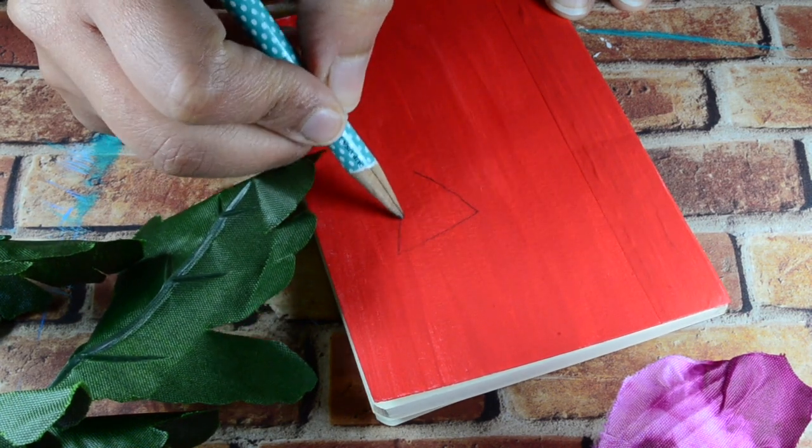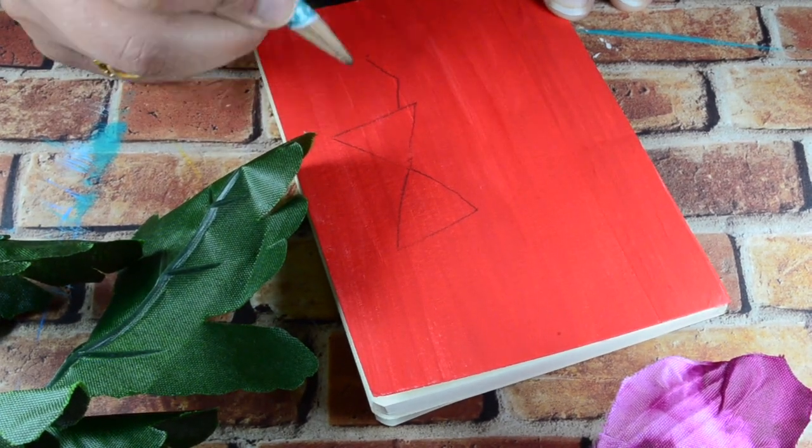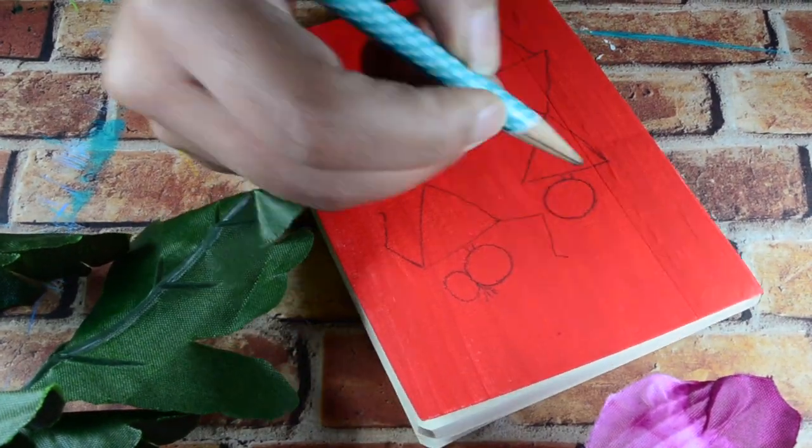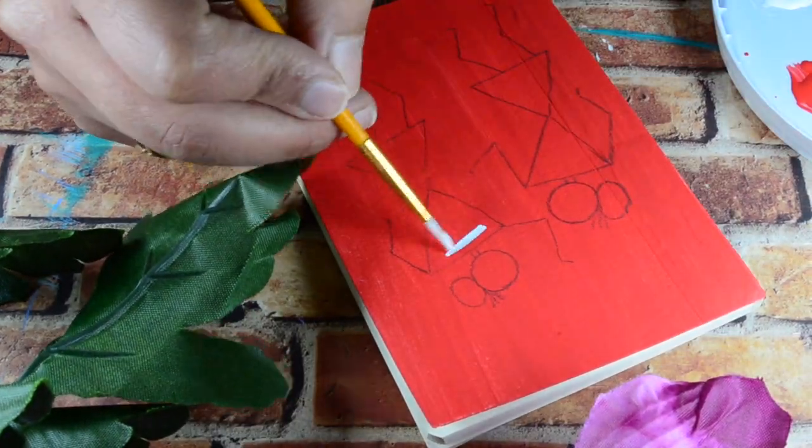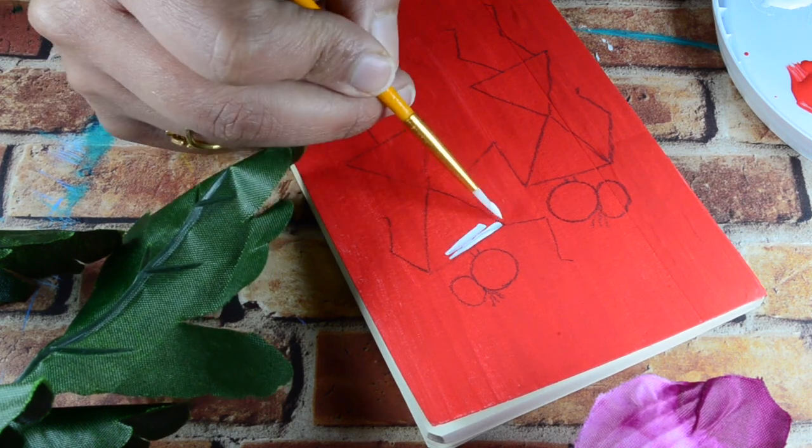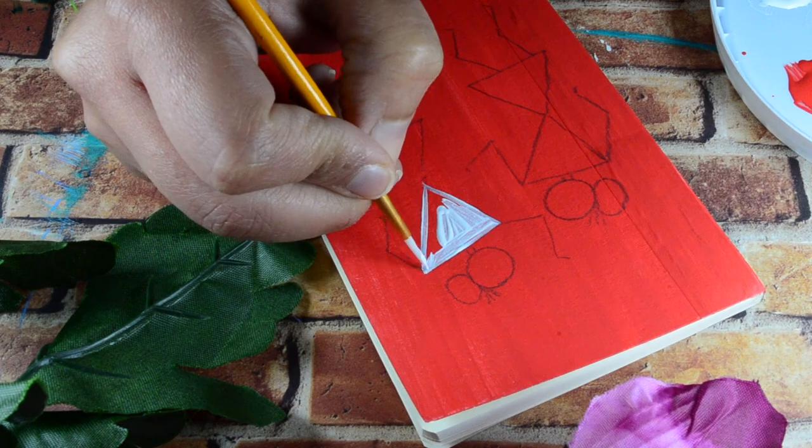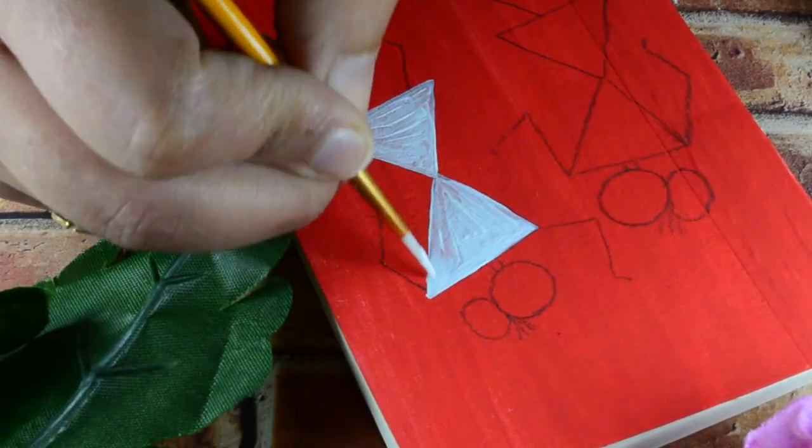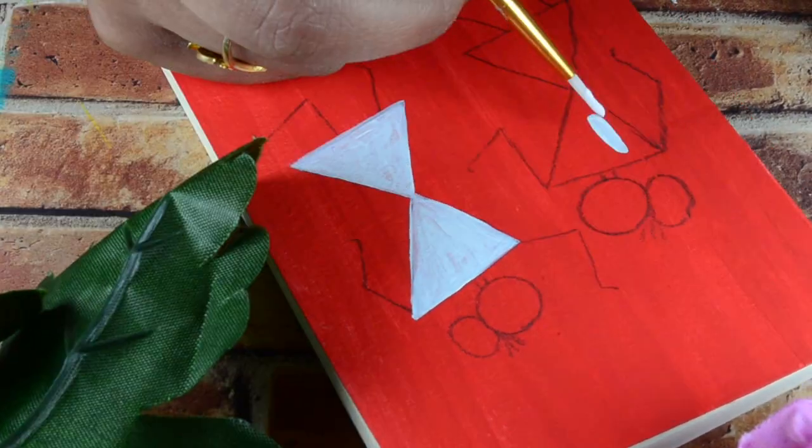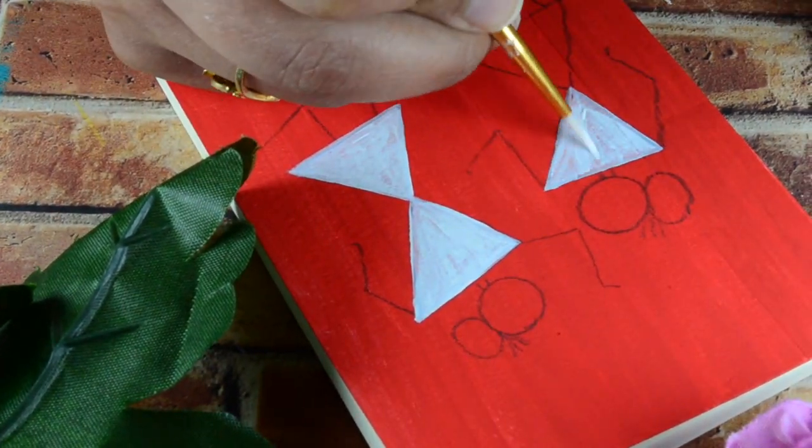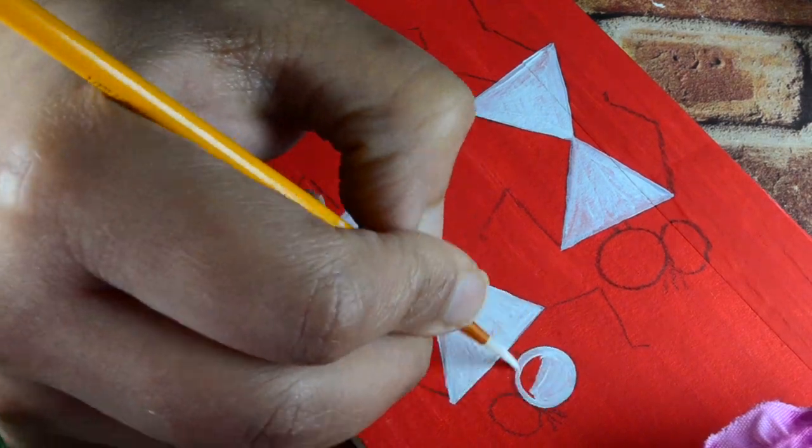Now our notebook cover is ready to paint some warli on it. If you want to know more about warli art, I have a full playlist related to warli art DIYs - you can watch that, I'll link in the description box below. Now I have drawn my warlis and I'm painting them with white acrylic paint, because white on red will pop out really nicely. Then I'll also add the border on top and on the bottom of this notebook cover.